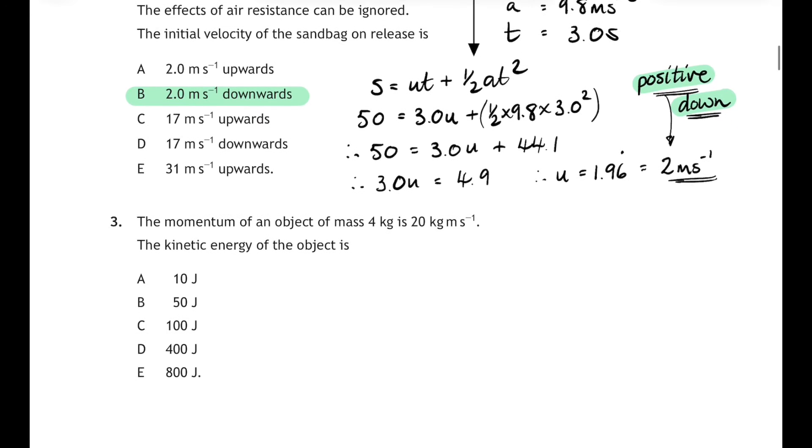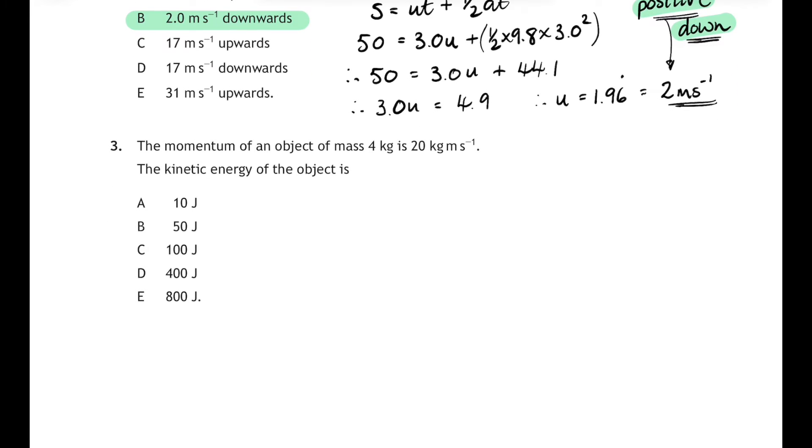On we go. Question three. Momentum of an object of mass four kilograms is 20 kilogram meters per second and we've to find the kinetic energy of the object. Well momentum p equals mass times velocity, so if we know the momentum is 20 and the mass is four then the velocity must be equal to five meters per second. And then if we sub that into the kinetic energy equation Ek equals a half mv squared, that's a half times four times five squared, gives you an answer of 50 joules and that corresponds to answer B.